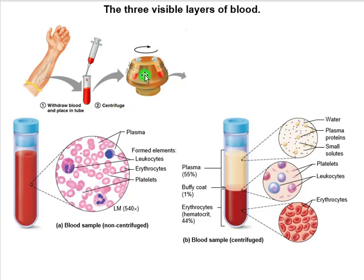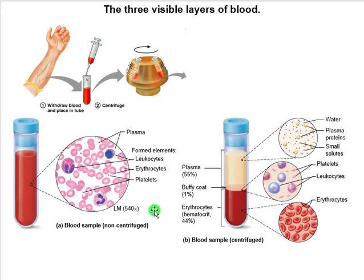Why are we centrifuging blood? We're centrifuging it so we can separate out the individual components. It helps us understand things, and for certain diagnostic testing purposes that's a useful strategy. For our purposes, it just helps us see what is inside blood.